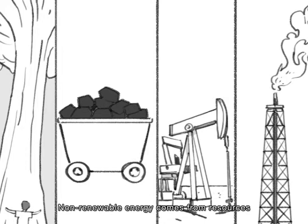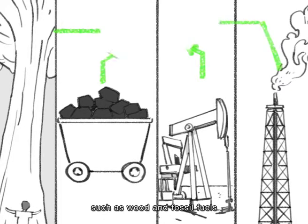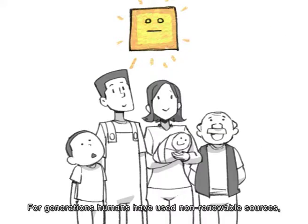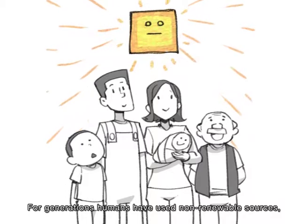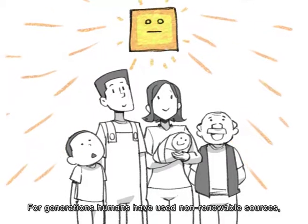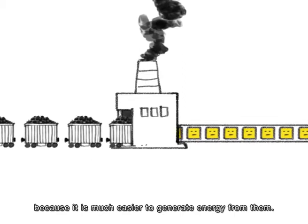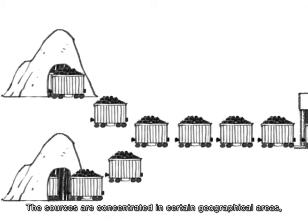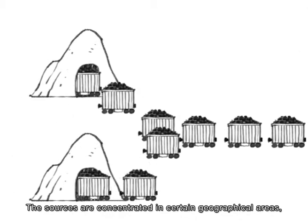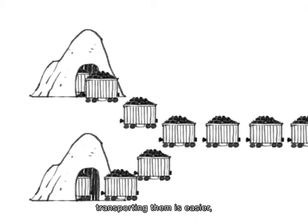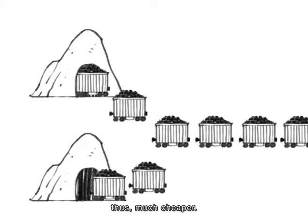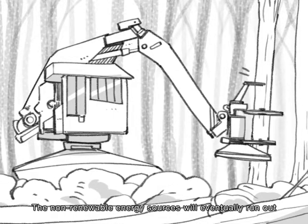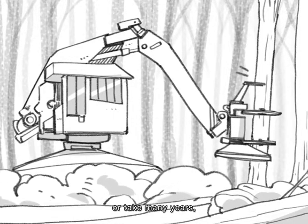Non-renewable energy comes from resources such as wood and fossil fuels — coal, oil, or natural gas. For generations, humans have used non-renewable sources because it is much easier to generate energy from them. The sources are concentrated in certain geographical areas, making transporting them easier and thus much cheaper.